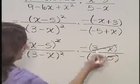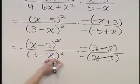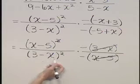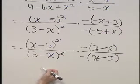Let's also cancel a 3 minus x with one of those 3 minus x's over here in the denominator. It's going to leave 1 in the denominator.